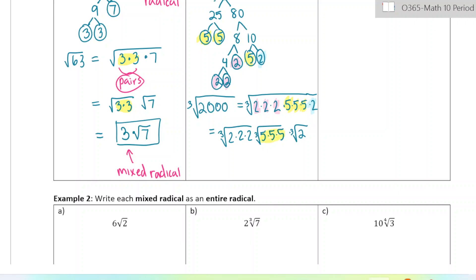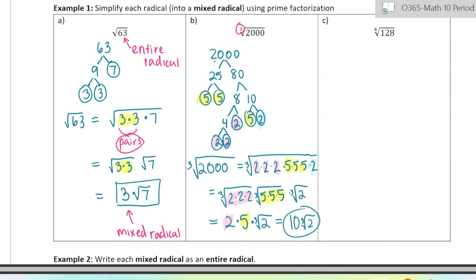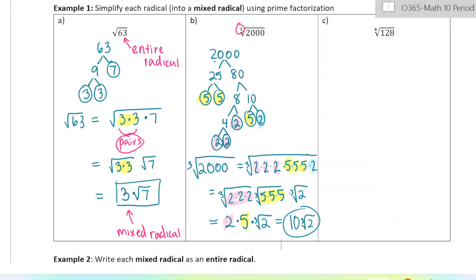So when you're doing the cube root, you look for triples. The cube root of 8 is 2, and the cube root of 125 is 5, and then we have this cube root 2. In the very last step, if you've answered multiple parts, you can just multiply them all together. Two times five would be 10, so we have 10 cube root 2 — that's our final answer. This is the entire radical, and it should be numerically equal to the mixed radical. The mixed radical is just more simplified; the numbers are a lot smaller.